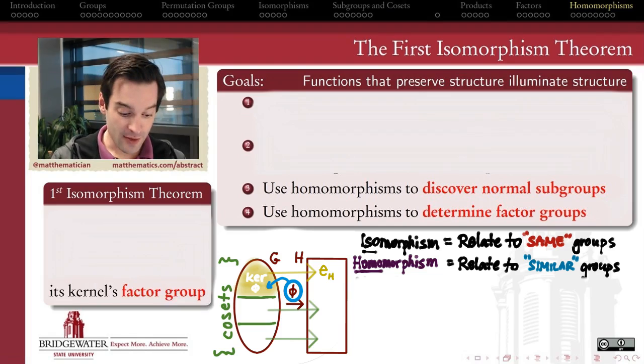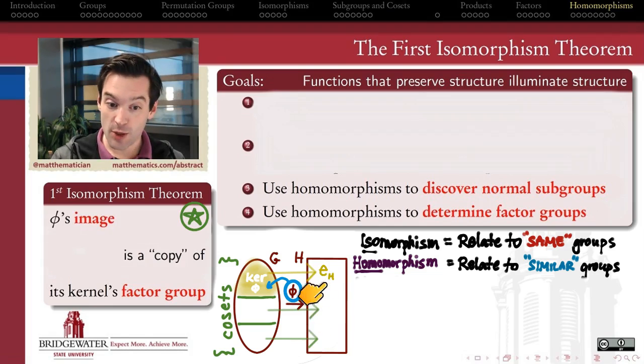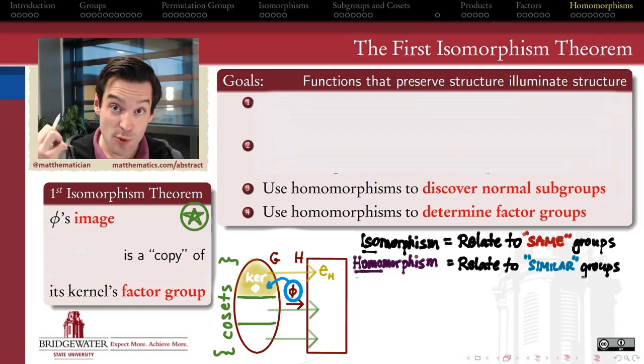All of this is going to boil down to probably the most important structure theorem that we have in our whole first semester of abstract algebra: the First Isomorphism Theorem. It tells you that the factor group of the kernel—in other words, the group of the cosets of the kernel of this homomorphism inside of G—and the image of the original homomorphism inside of H are copies of one another. They're isomorphic to one another. In that sense, every homomorphism is hiding an isomorphism inside of it: an isomorphism between the factor group by the kernel in the domain, and the image subgroup in the target group on the right.